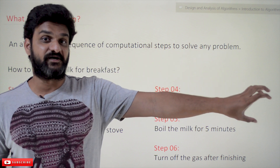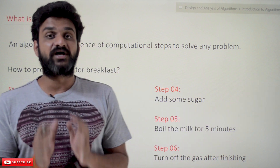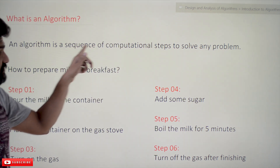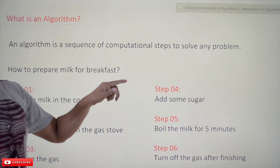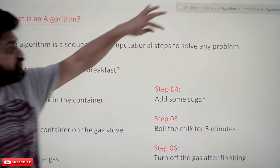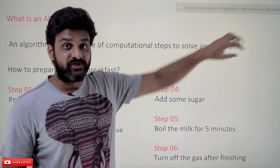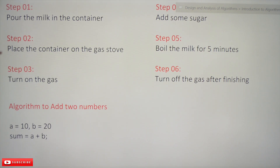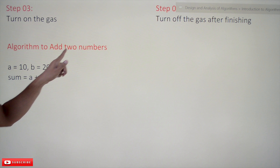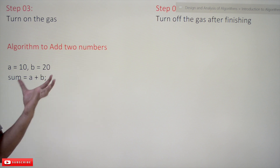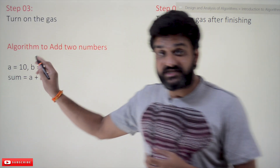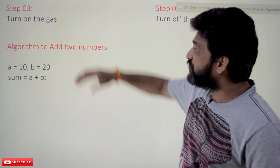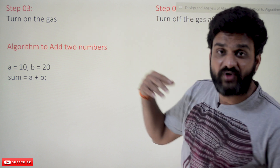This is what we call an algorithm — the steps involved to do a certain work. In the same way, in computer science, an algorithm is a sequence of computational steps to solve any problem. We'll understand that concept using another simple example: an algorithm to add two numbers.